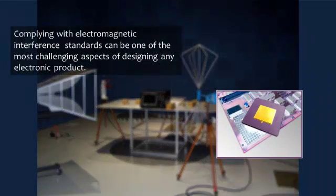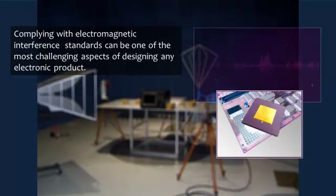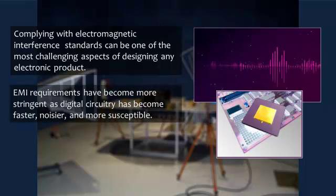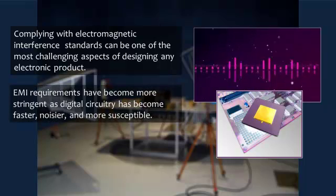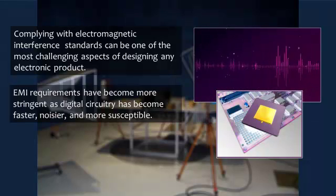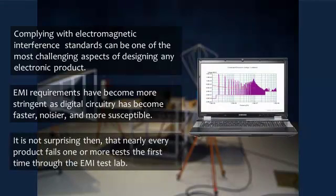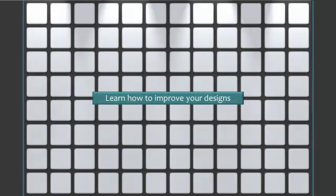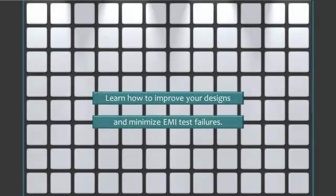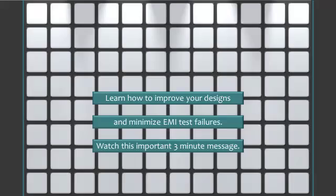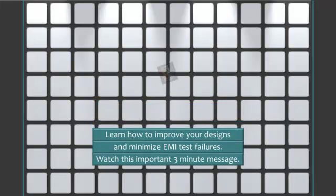Complying with electromagnetic interference standards can be one of the most challenging aspects of designing any electronic product. EMI requirements have become more stringent as digital circuitry has become faster, noisier, and more susceptible. It's not surprising, then, that nearly every product fails one or more tests the first time through the EMI test lab. If you would like to learn how to improve your designs and minimize EMI test failures, we invite you to watch this short, three-minute video.